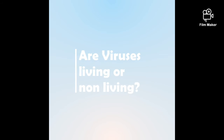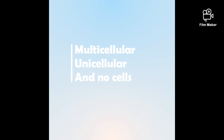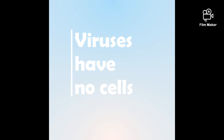Viruses are actually very complicated, so first we're going to look at cells to help explain viruses. Every living thing is made up of cells. There are multicellular living organisms and unicellular living organisms — multicellular is us, humans and animals such as your pet. Unicellular are things like bacteria. Viruses are actually not made of any cells.